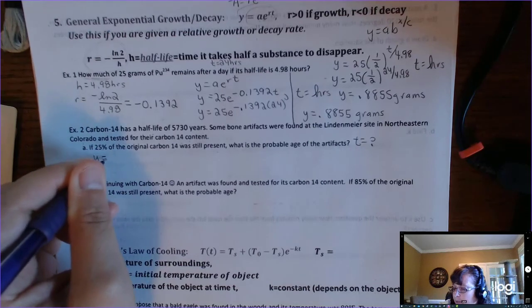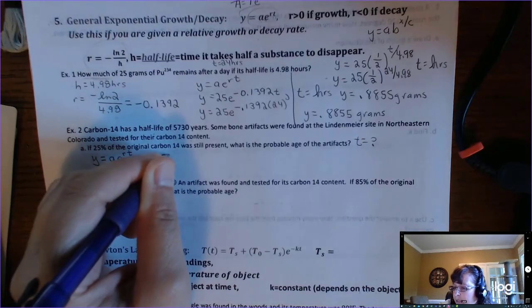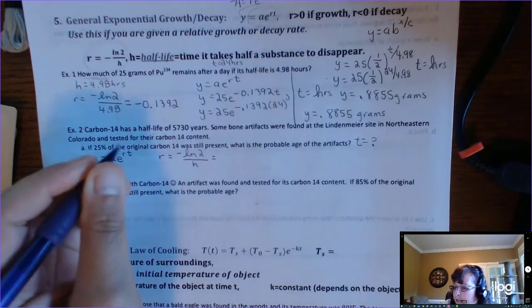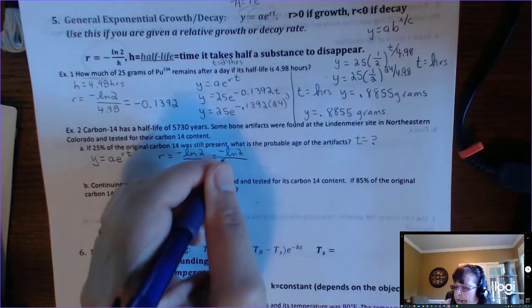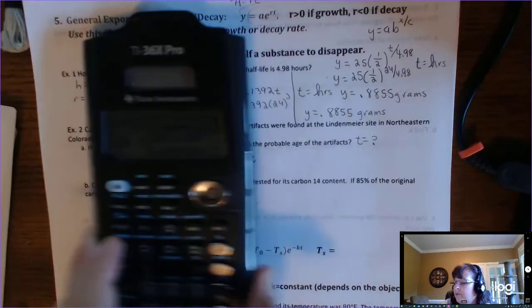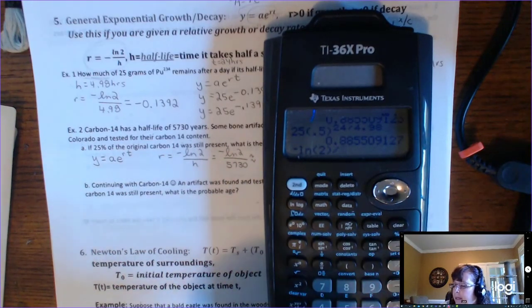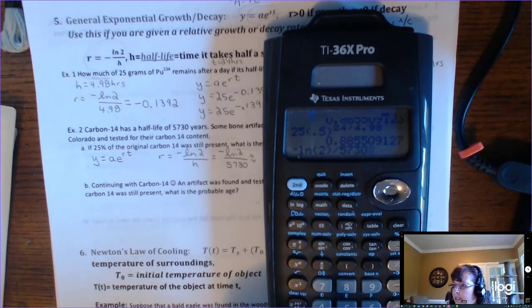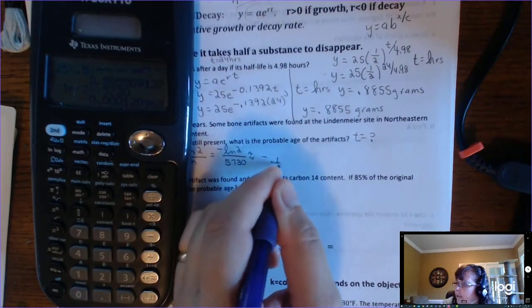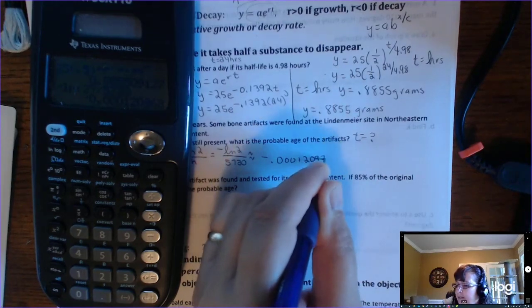All right, and let's use this. Y, which is the final amount, equals A, which is the initial amount, E to the RT. Remember, if it's a half-life problem, you can find R, negative ln of 2, divided by H. So R is negative ln of 2, divided by 5,730. And this is going to be a very small number, so we do want to use the storing capabilities if we can. So negative 0.00012097. That's R.